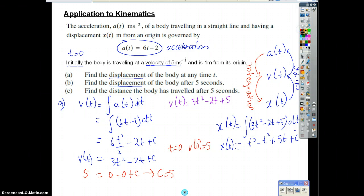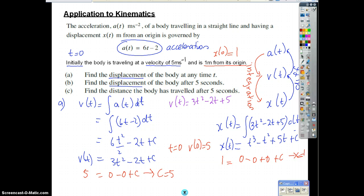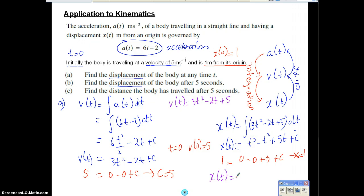Once again, there's our expression for the displacement, but we haven't got our constant. So let's have a look. Where's the information we've got? Well, initially we know that it is 1 meter from its origin. So we know that x(0) is equal to 1. So let's put that in. x(0) is equal to 1, put 0 in here. What have we got? 0 minus 0 plus 0 plus c. So we know that c is equal to 1. So what's our final expression for displacement? We have x(t) equal to t cubed minus t squared plus 5t plus 1.